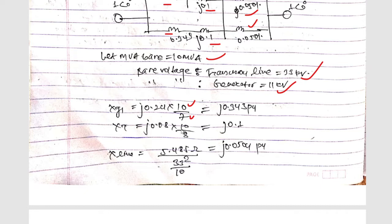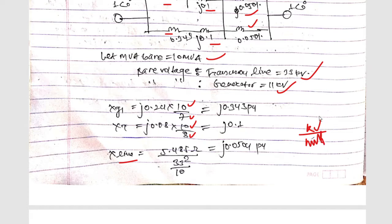Similarly for the transformer: 0.08 × (10/8) = 0.1 per unit. For the transmission line, it is actual impedance divided by base impedance. The actual impedance is 5.485 ohm. Base impedance for the line = kV² / MVA = (33)² / 10. So the line reactance = 5.485 / (33² / 10) = 0.0505 per unit.